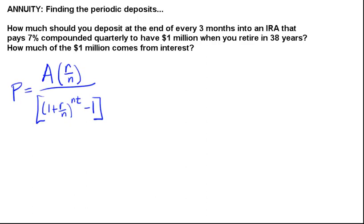So here's the formula we're going to use. It's the same formula you saw in a previous video, except that this time, instead of solving for A, we're solving for P because we know what the final value is going to be. That's going to be our million dollars. And we're looking for how much should we be depositing every quarter. So we're looking for the periodic deposits this time.